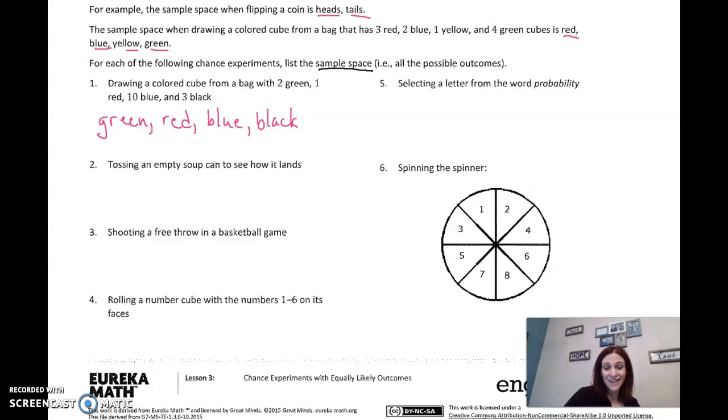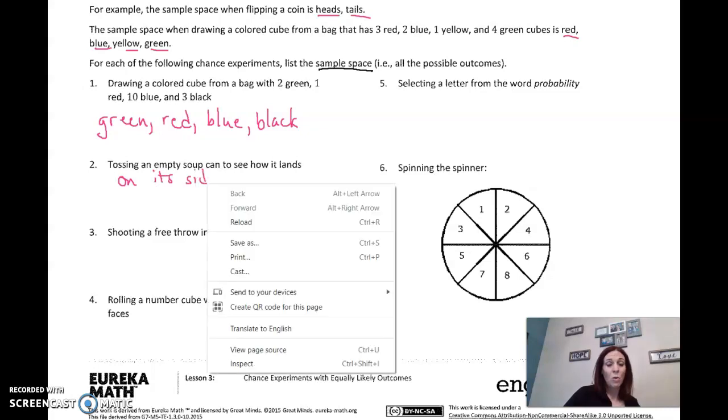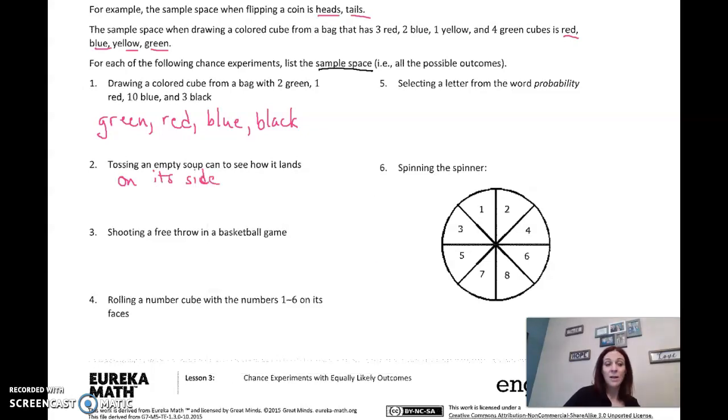I know that ten is more likely, but that's not what we're worried about. We want to know what type of outcomes we could get. Tossing an empty soup can to see how it lands. Well, that would be kind of like a paper cup, right? It could land on its side, right side up, or upside down, just like the paper cup. Assuming that there's a top and bottom to this.